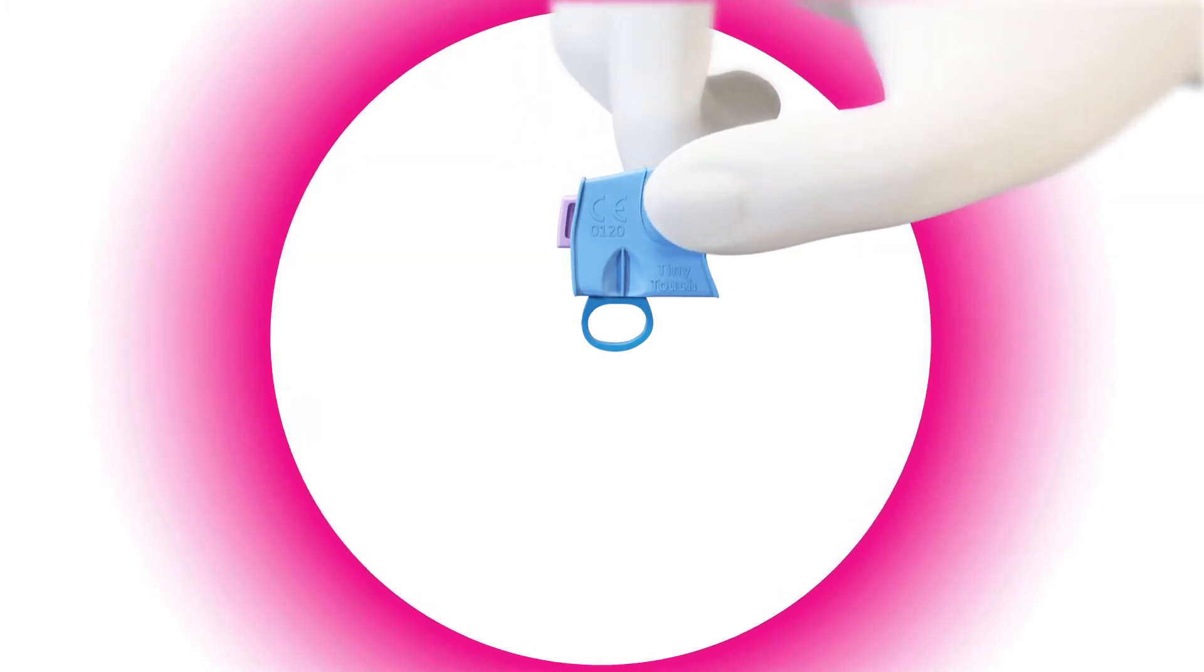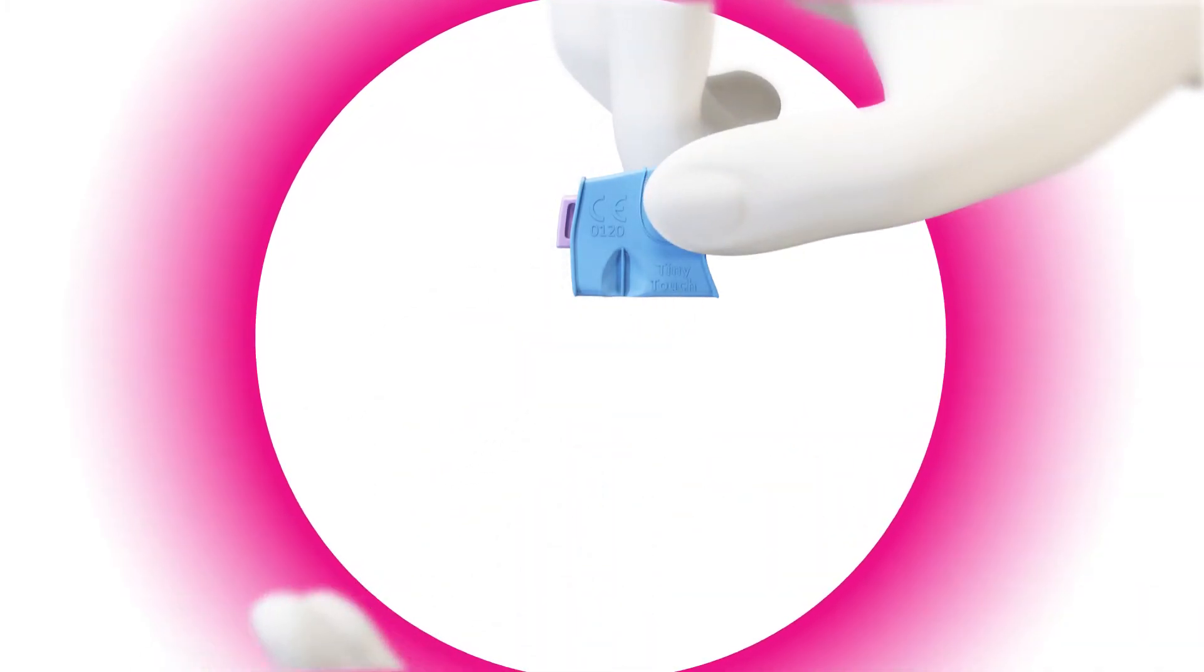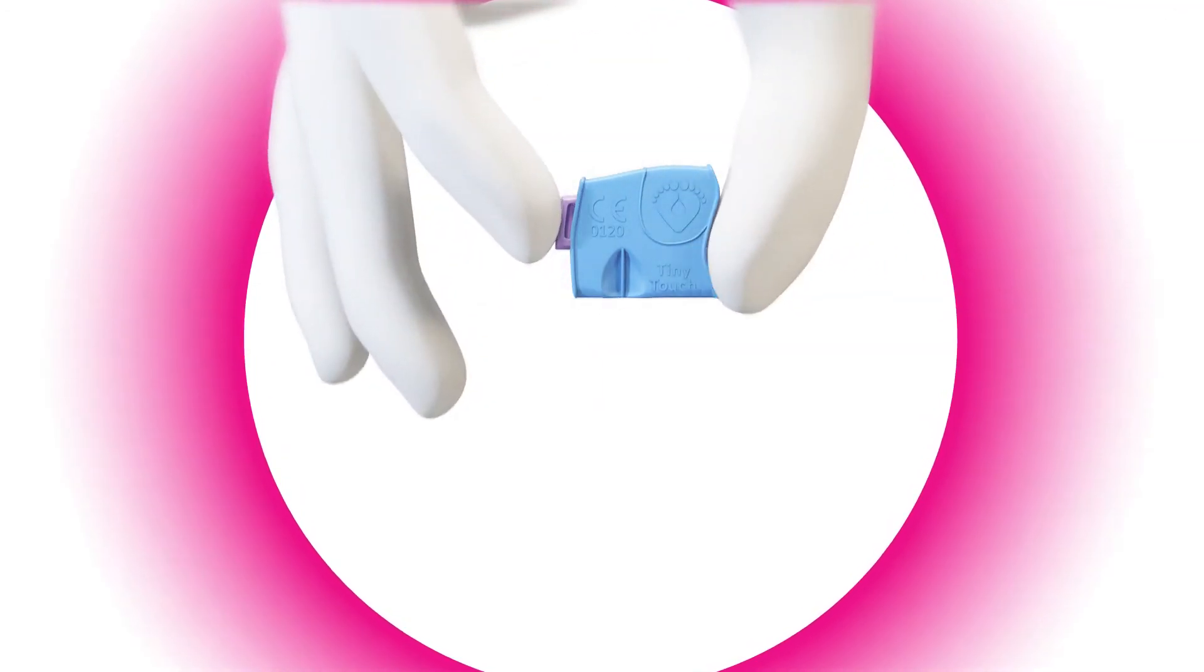Remove the sterility tab by pulling it straight off. Hold the Unistick Tiny Touch with the thumb and finger gripping on the wider side.